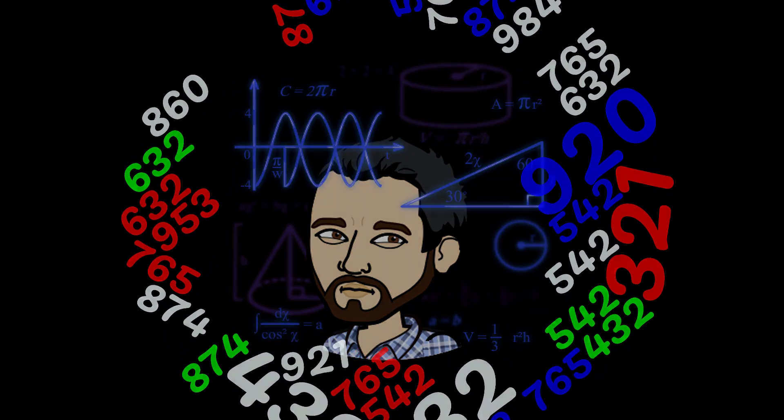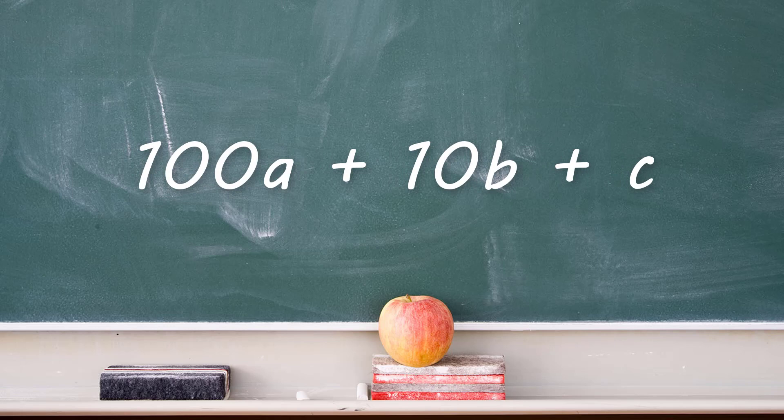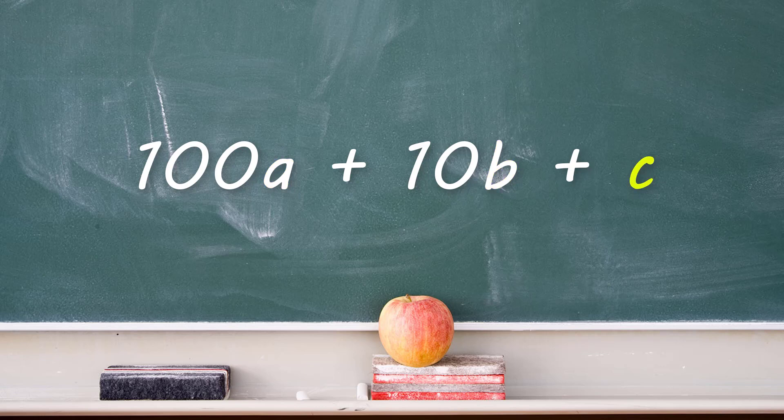Let's discuss why. Any 3-digit number can be represented in this expanded form, where A represents the first digit, B represents the second, and C represents the third.